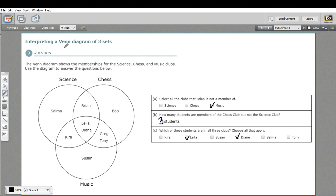And that is how to interpret a Venn diagram that describes three sets.